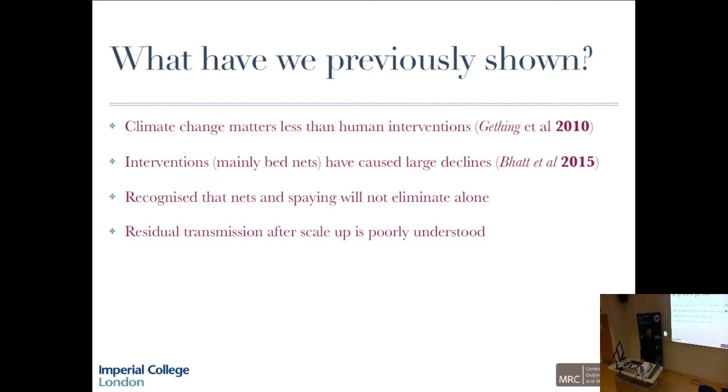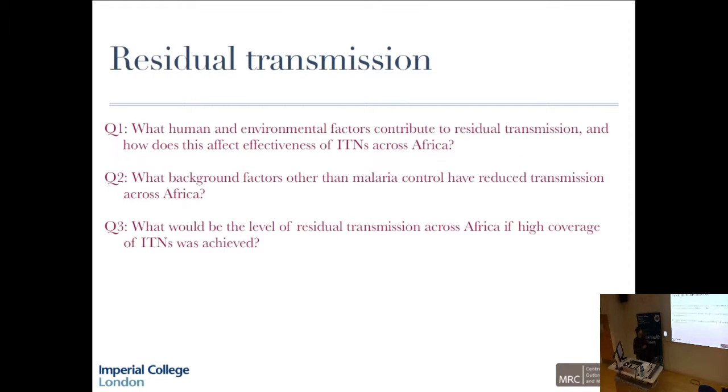Of course, we're now at the stage where we take a sober look back and don't rest on the wins and look forwards. The key recognition is that bed nets and spraying don't look like they'll eliminate malaria alone, because we're starting to talk about elimination in some African countries. And residual transmission after scale-up is very poorly understood. So what are the key questions we're trying to answer now in this new research agenda moving forward?